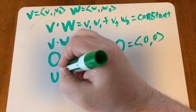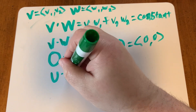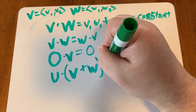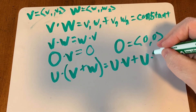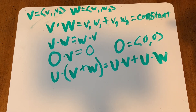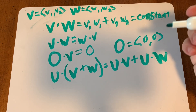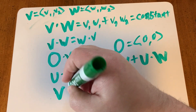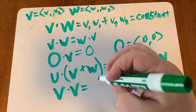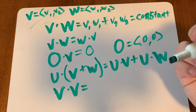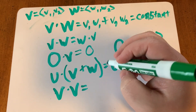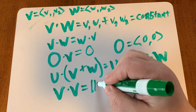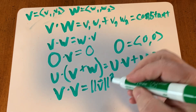There is also distribution with the dot product: U dot (V + W) gives you U dot V plus U dot W. And if you take the dot product of a vector with itself, you get V1 times V1 which is V1 squared, plus V2 times V2 which is V2 squared — that's the magnitude squared.